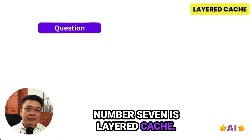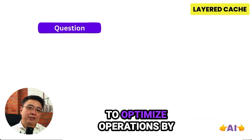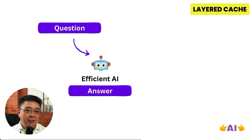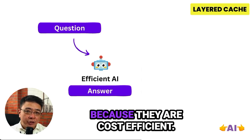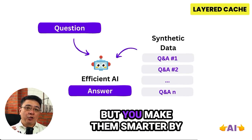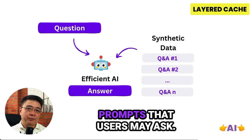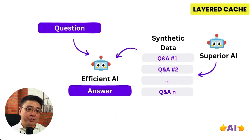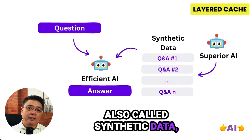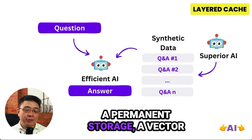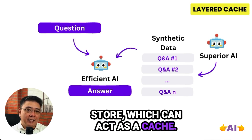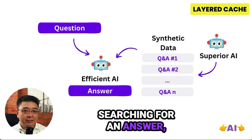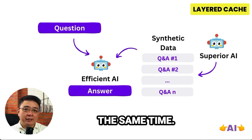Number seven is Layered Cache. Layered Cache is when you want to optimize operations by using smaller, cost-efficient models like Microsoft's Phi-3 or Llama 7B. You make them smarter by preparing a set of questions and prompts that users may ask — you can ask a larger model to produce sample questions and prompts, also called synthetic data, then save the answers into a permanent storage vector store accessible as a cache. The smaller model can then reference this cache when searching for an answer, making it smart and efficient at the same time.